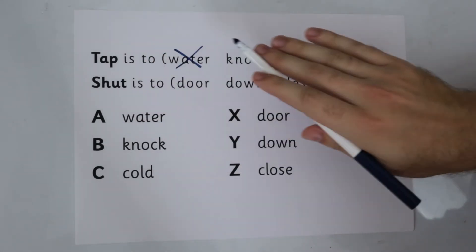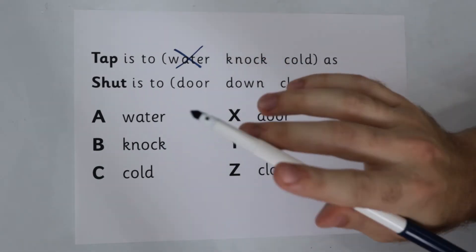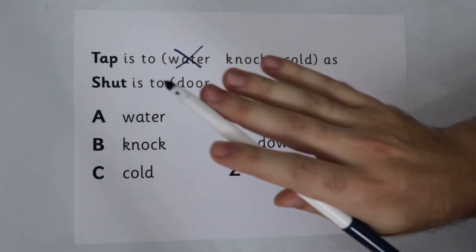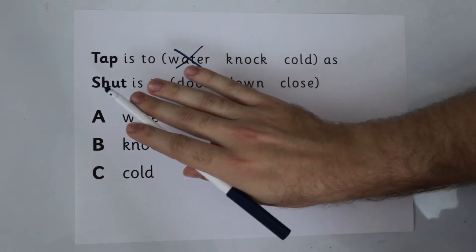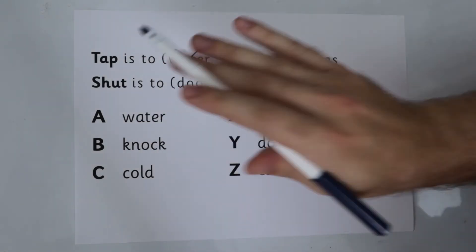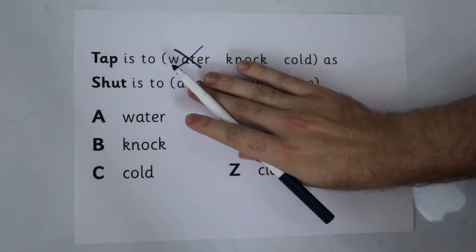So here tap is to knock, these are synonyms, they mean the same thing. So let's check with shut. Can we find a word which means the same thing as shut? Shut is to door, they don't mean the same thing. They're often put together because you can shut a door, but they don't mean the same thing. So don't think about door.